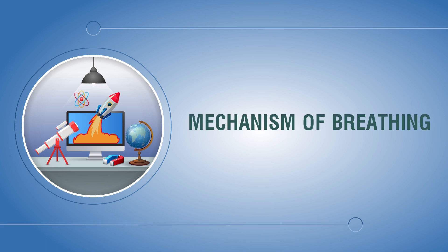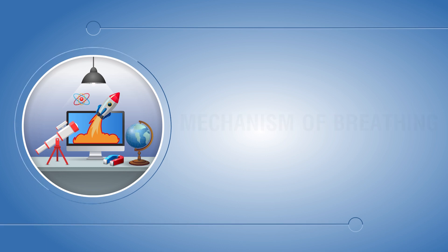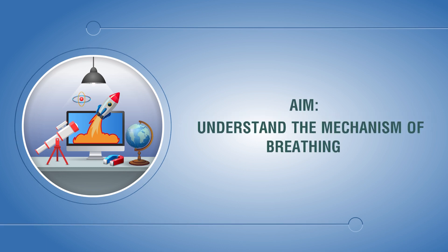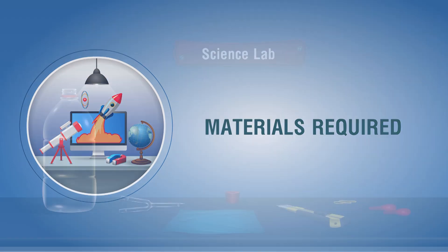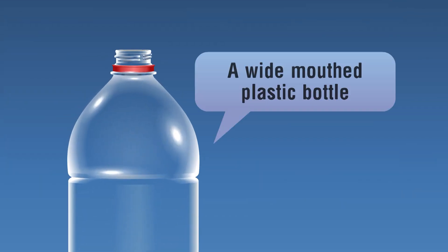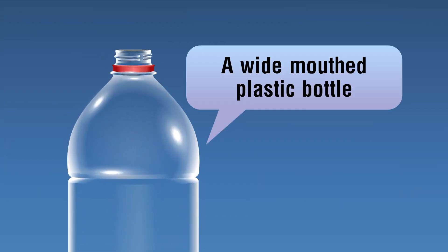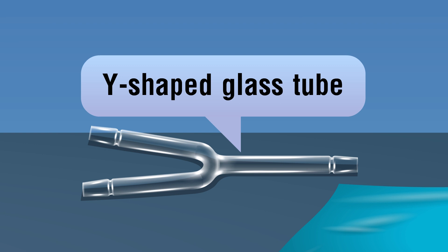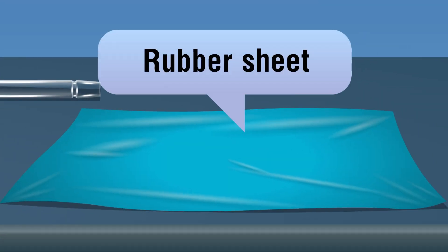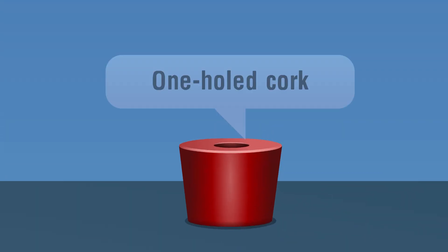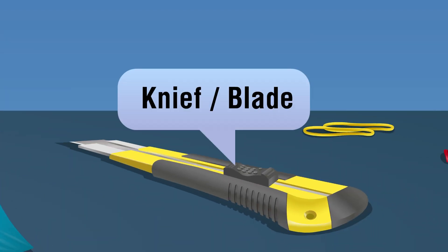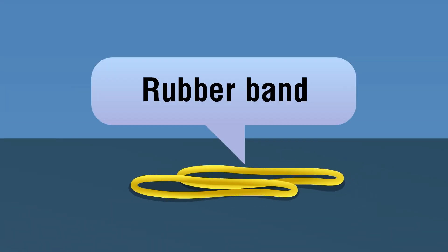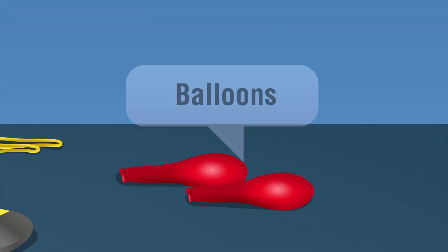Mechanism of Breathing. Aim: Understand the Mechanism of Breathing. Materials Required: a wide-mouthed plastic bottle, Y-shaped glass tube, rubber sheet, one-hole cork, blade, rubber band, and balloons.